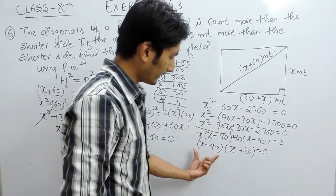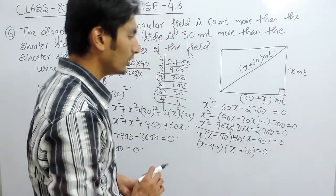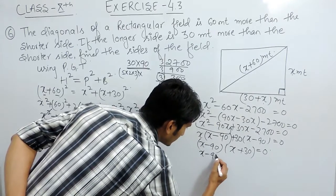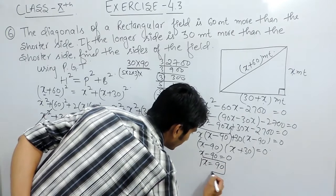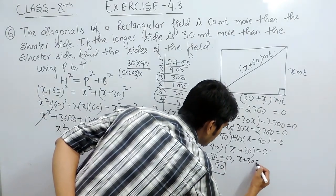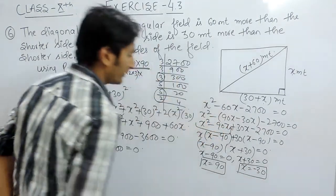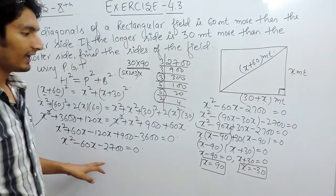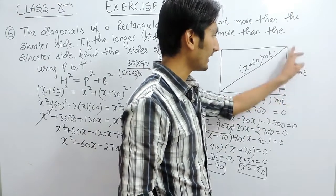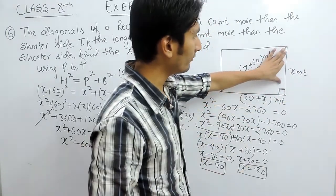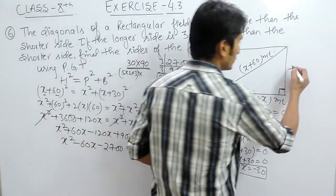We know that if the multiplication of two factors equals zero, then each factor must equal zero. So either x minus 90 equals 0, giving x equals 90, or x plus 30 equals 0, giving x equals minus 30. So the values of x are 90 and minus 30.